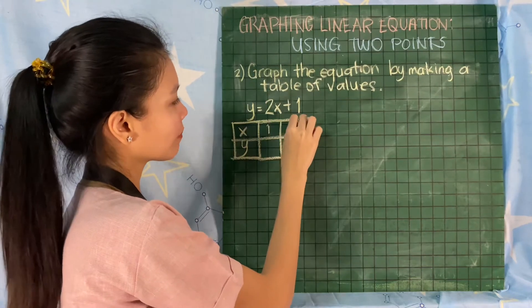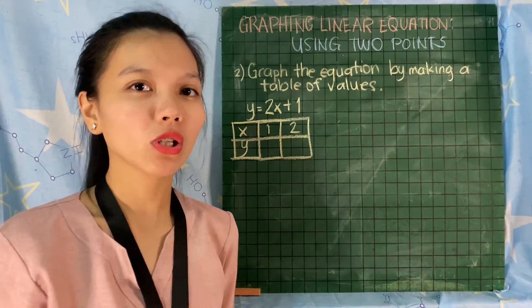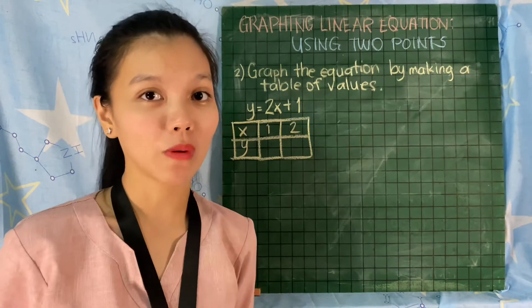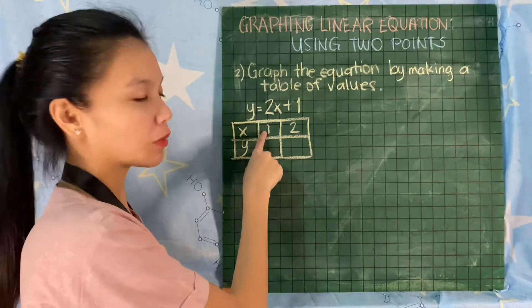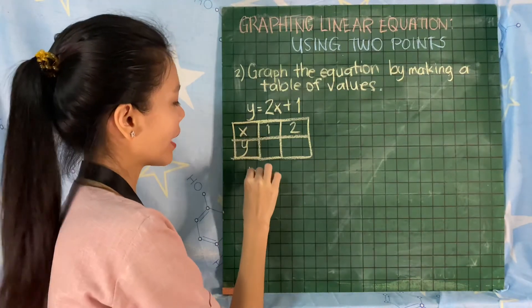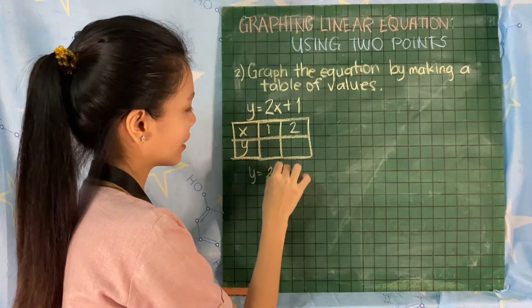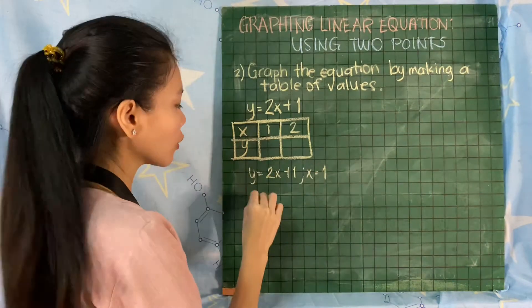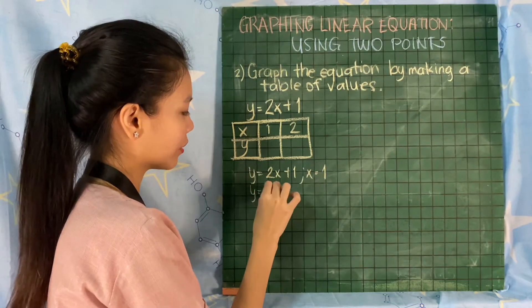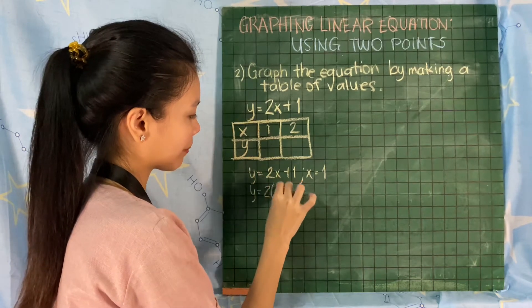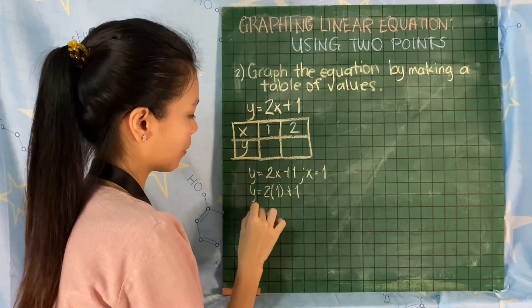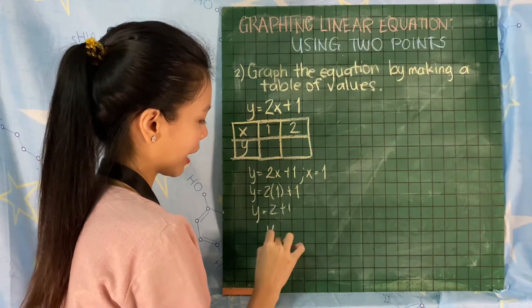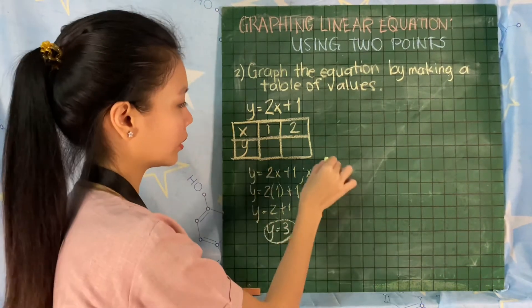We are going to use y = 2x + 1 as our equation. You will just evaluate it by substituting the value of x into the given equation. The first one: we have y = 2x + 1 where x = 1. Replace x with the value 1, so that will become 2 times 1. y = 2 times 1 is 2 plus 1, that will become 3.